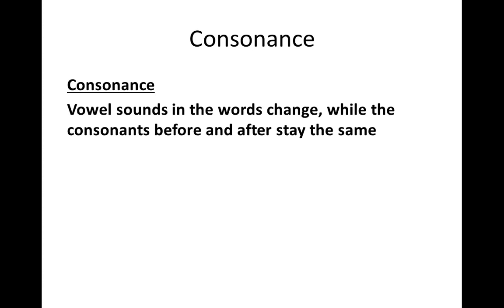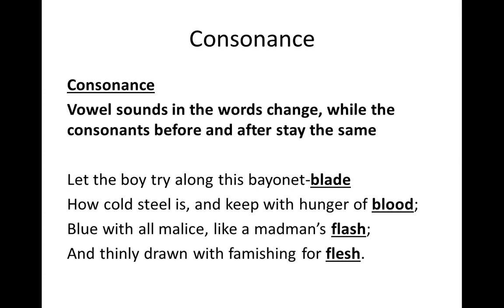Consonance is quite a bit like off rhyme. Consonance occurs when the vowel sounds in words change, but the consonants before and after those vowels stay the same. For example: 'Let the boy try along this bayonet blade how cold steel is, and keen with hunger of blood, blue with all malice, like a madman's flash, and thinly drawn with famishing for flesh.' So 'blade' and 'blood' both begin with B-L and end with the D sound, but the vowel changes. Then 'flash' and 'flesh' — almost rhyming sounds that carry a thread through the poem but aren't as sing-songy as a full rhyme.